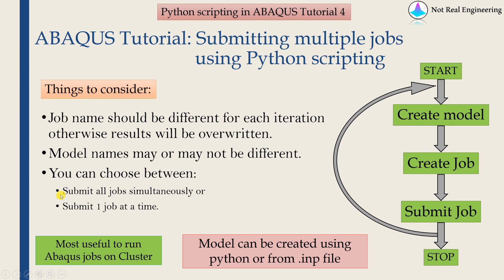You have two options: you can submit all the jobs simultaneously, or you can submit one job at a time. There are two approaches to achieve this, and I am going to show you both. One will be to create the model using a Python script, and another will be to create the model using INP files.